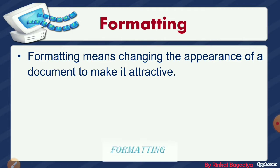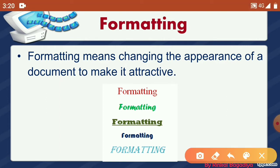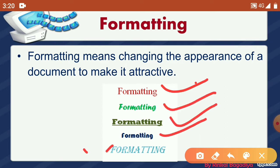You can see on the screen how formatting looks. Here the text is in red color, then green color, then dark green color, then blue and sky blue color. The font style is also different for each. So this is called formatting — we can change the look or appearance of the text and we can beautify the text in Word 2010.